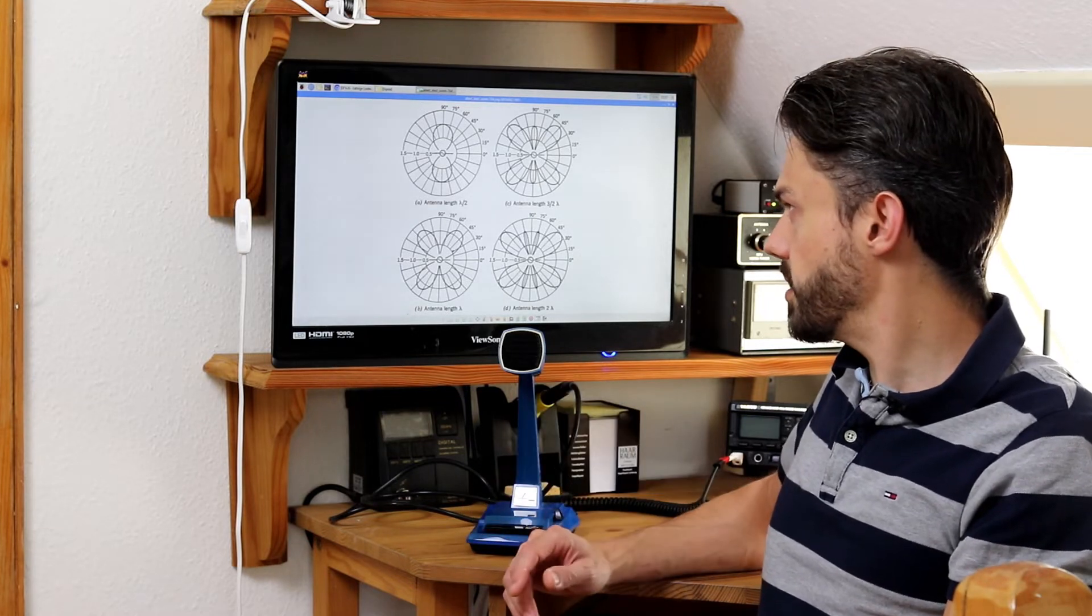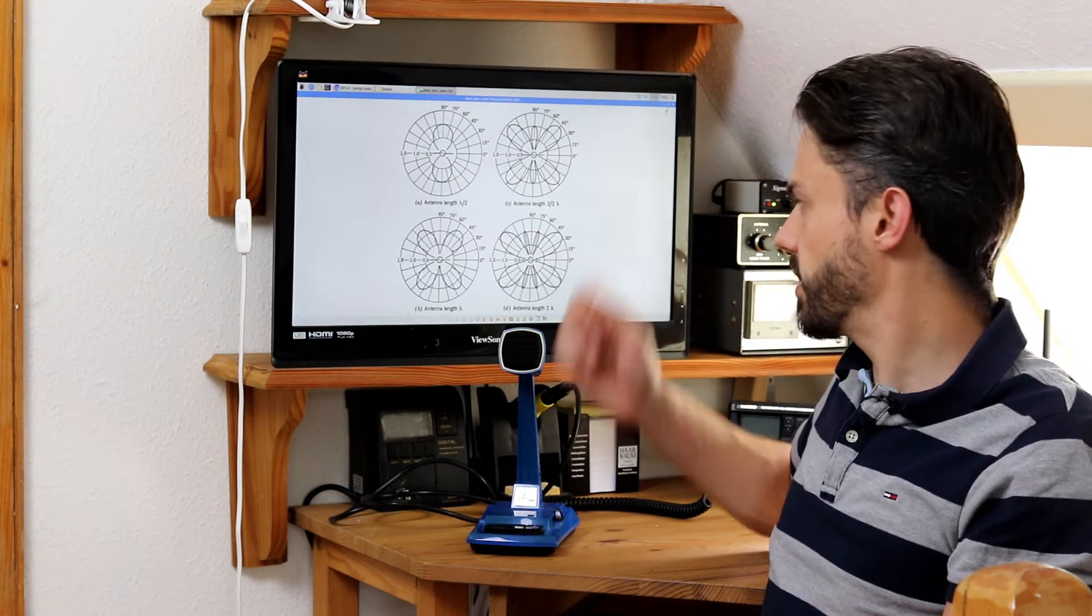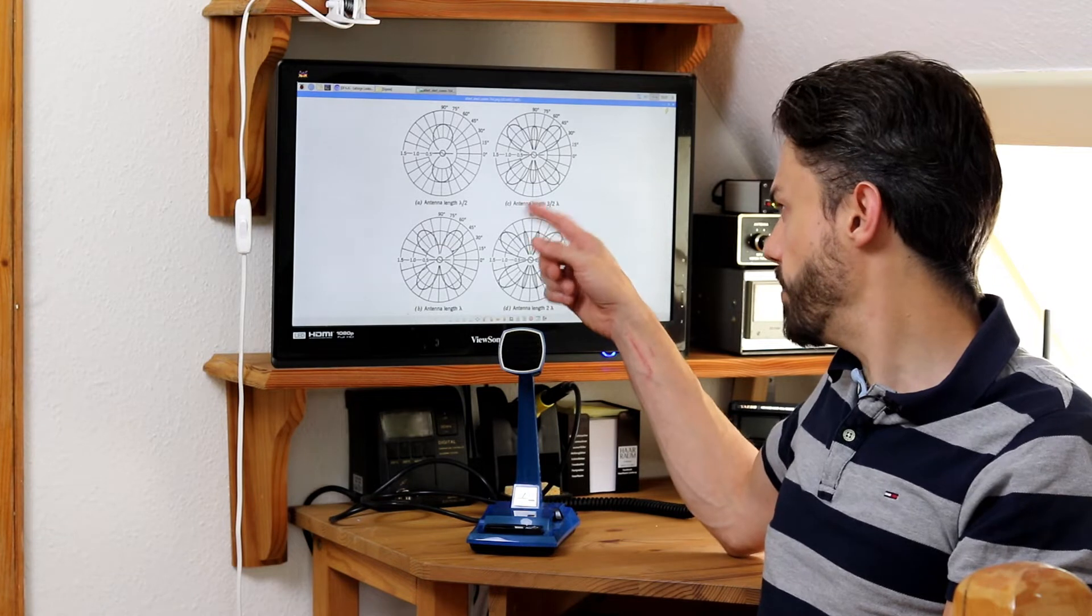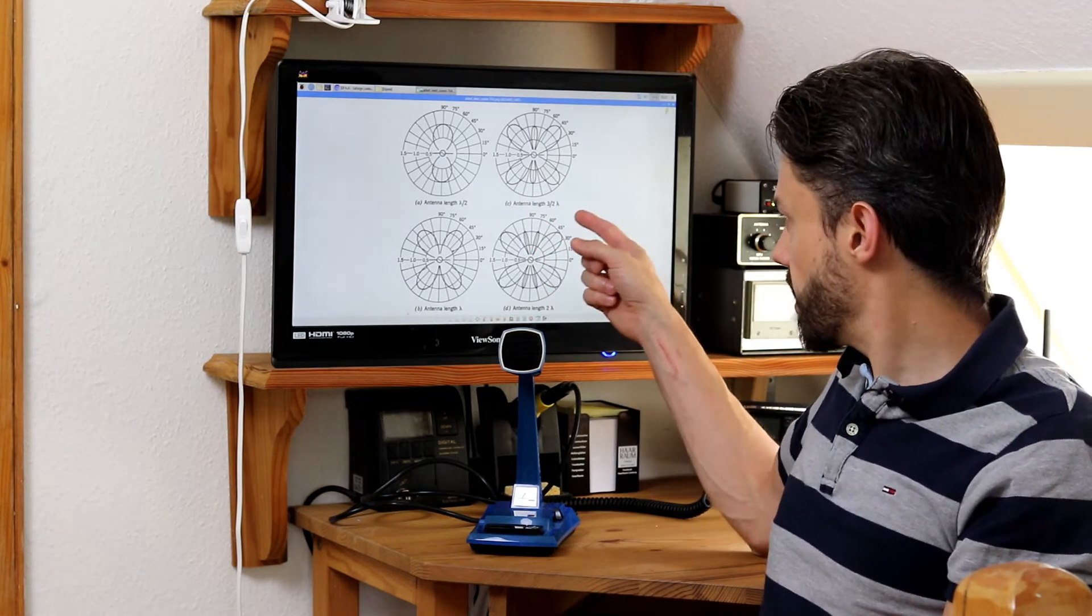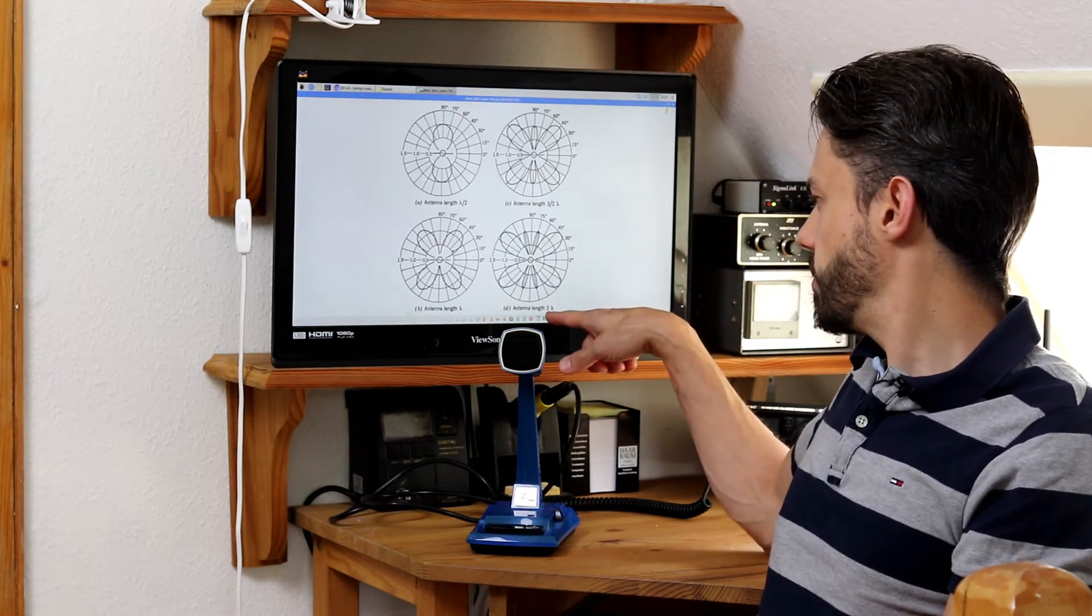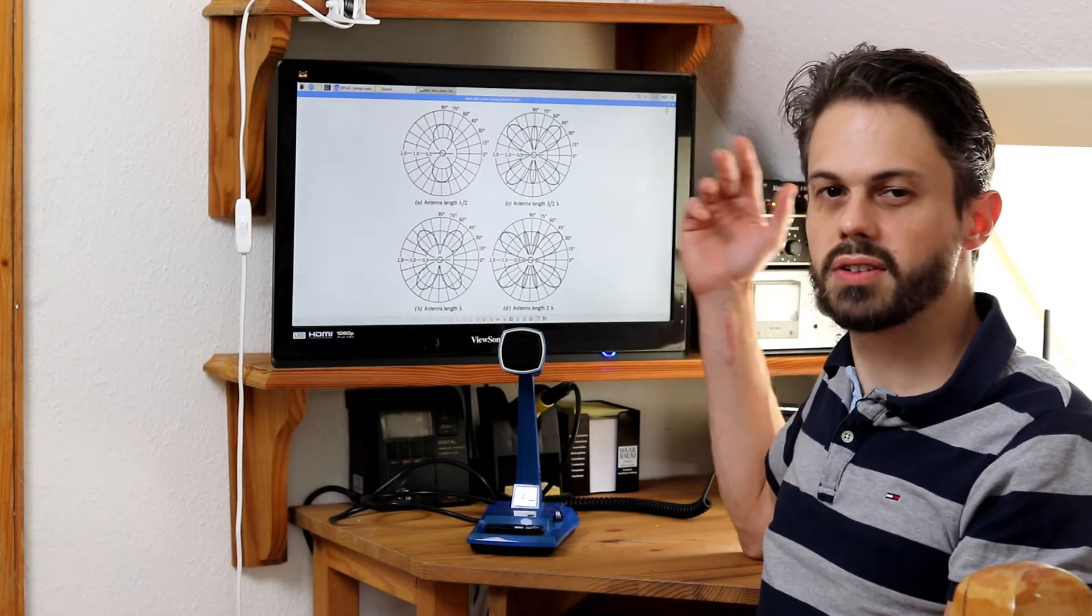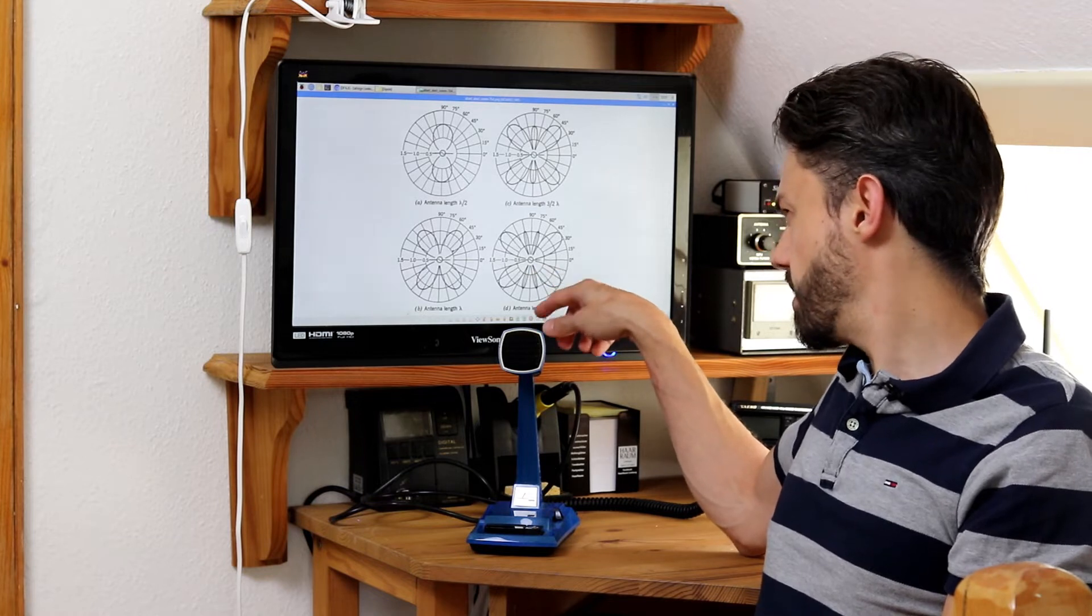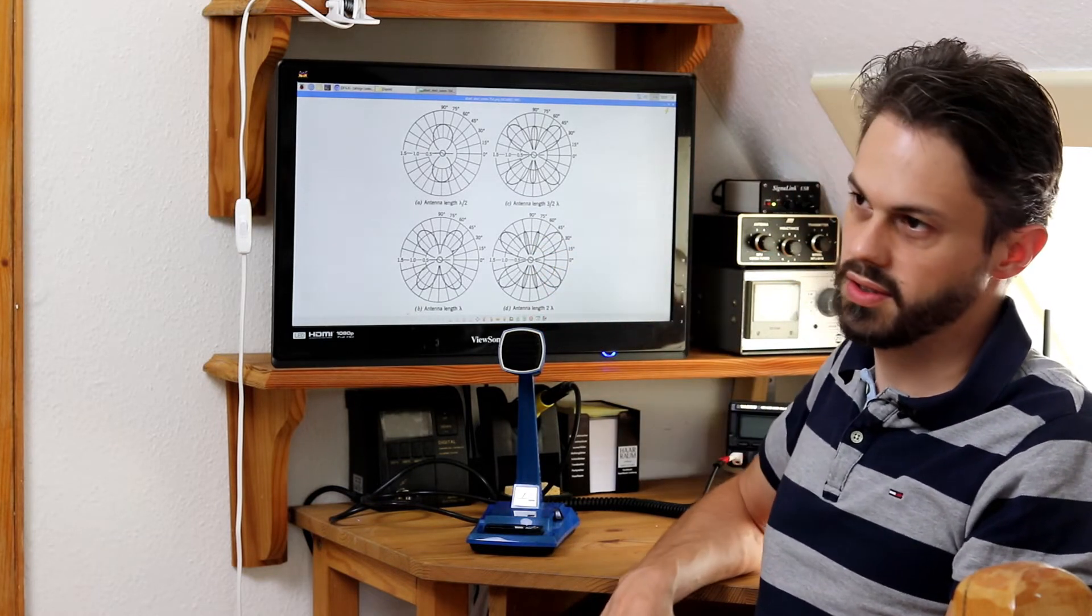So that's kind of predictable. So you can cover all the stations that are within these lobes, you can have great contact. Now if you look at when you go up in frequency and you use the same wire then all kinds of lobes start to appear. And if you have a dipole for 80 meter and you use it on the 20 meter band the lobes start getting weird. And they start getting weirder and weirder and weirder the higher you go in frequency.